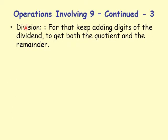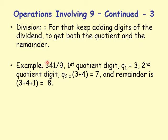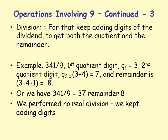Now a division problem: we are going to divide a number by 9. For that, we keep adding digits of the dividend to get both the quotient and the remainder. Example: 341 divided by 9. The first quotient digit Q1 equals 3, taken from the leftmost dividend digit. The second quotient digit Q2 equals Q1 plus the next digit: 3 plus 4 equals 7. The remainder is 7 plus the last digit 1, which equals 8. So 341 divided by 9 is 37 remainder 8.